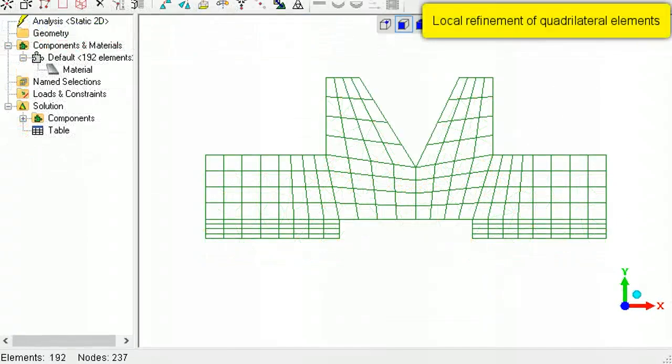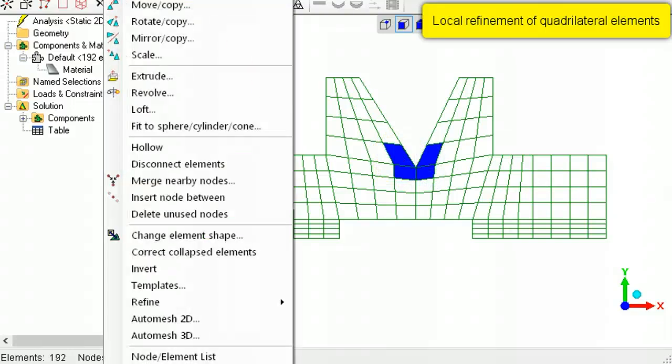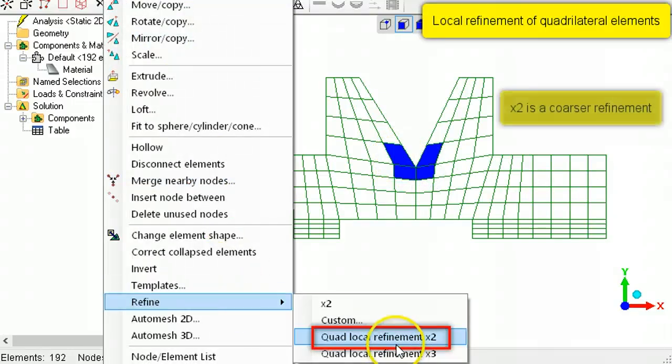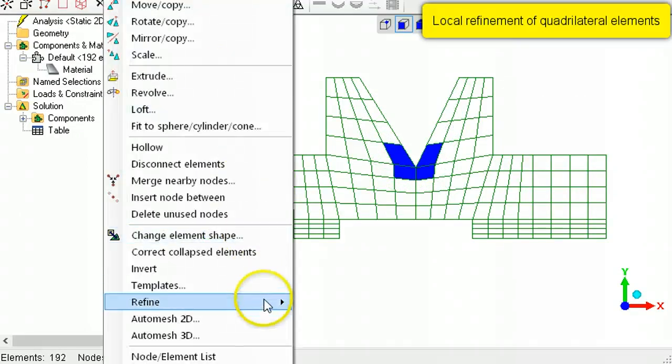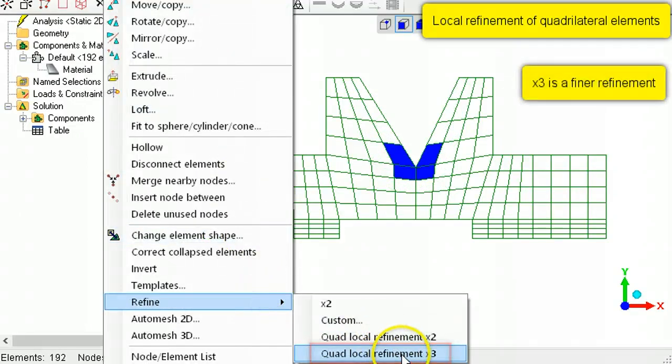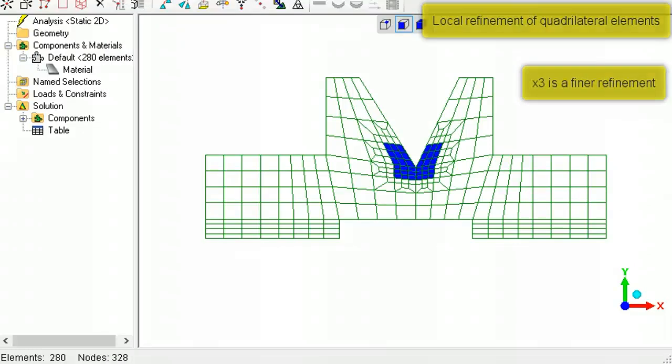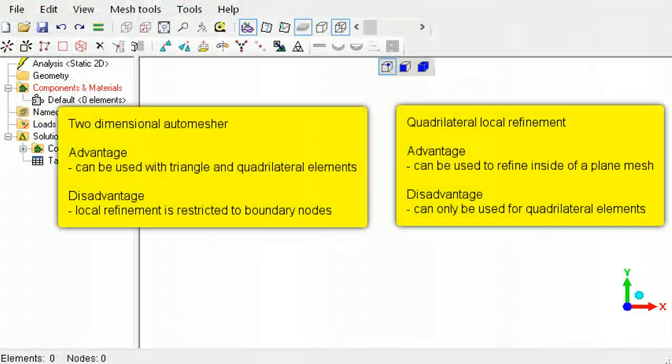The second way to locally refine a mesh is to first select the areas, then use quadrilateral local refinement x2, or use the quadrilateral local refinement x3 for an even finer mesh. The differences between the two-dimensional auto mesher and the quadrilateral refinement tool are as follows.